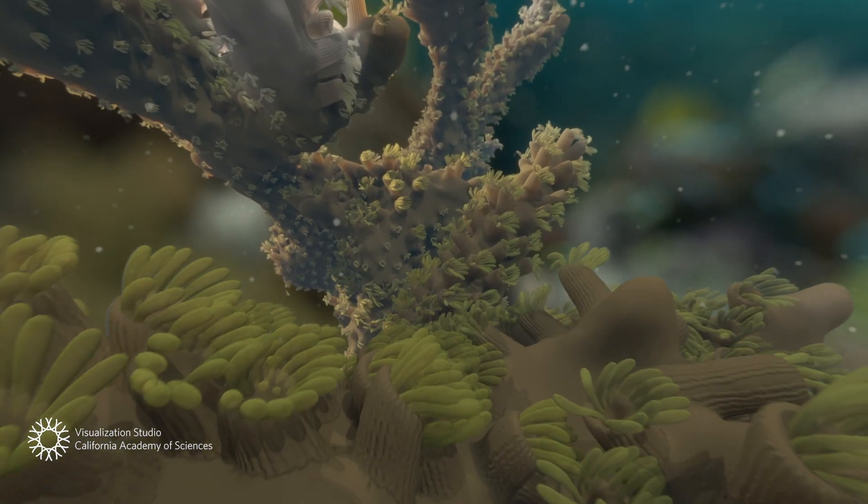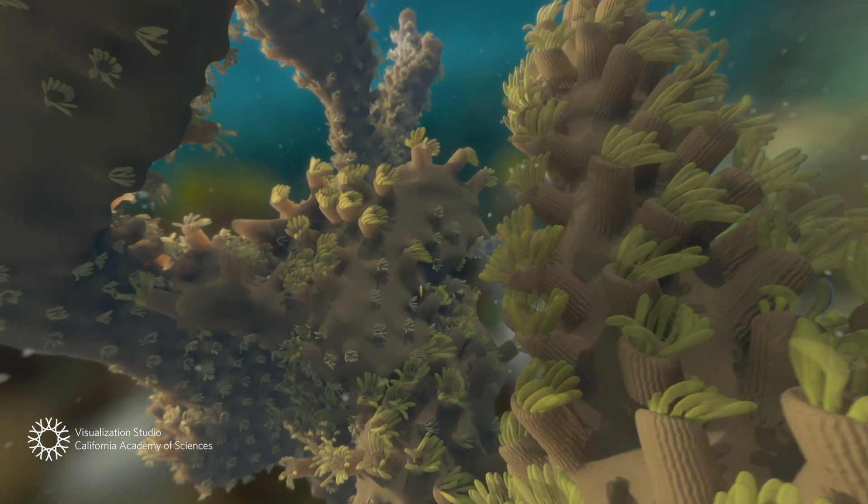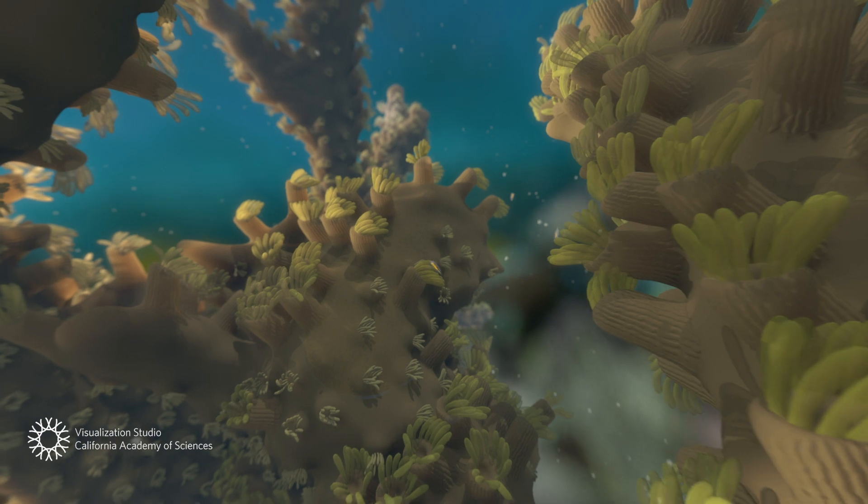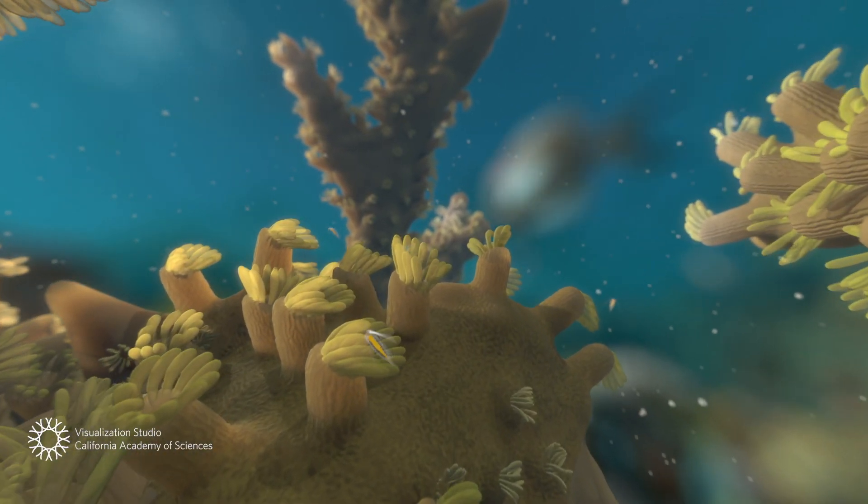Each coral is actually made up of an entire colony of tiny animals called coral polyps. And like all animals, they eat.